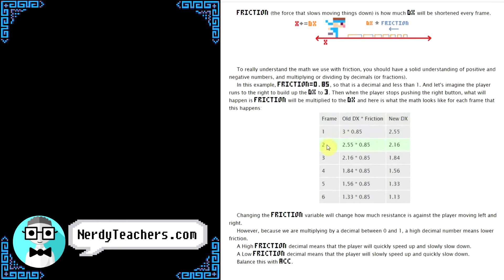Then on the next frame, that is now considered the old DX, and it will be multiplied by friction again. Notice that the DX just gets smaller and smaller every frame — this creates the slowdown effect before the player comes to a stop. You can see that happening in this picture: the DX is here and shows the player X changing by 3 pixels, but the friction cuts a percentage of that away, so the next frame the player only moves by 2.55 pixels. Friction cuts back more and more, making DX shrink and making the player move less each frame.